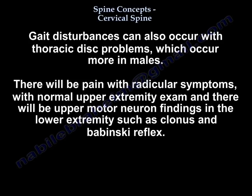Gait disturbance can also occur with thoracic disc herniation, which occurs in males. You will have pain with radicular symptoms and a normal upper extremity exam, but upper motor neuron findings in the lower extremity such as clonus and Babinski.